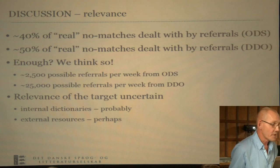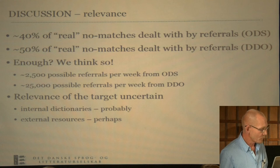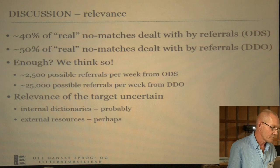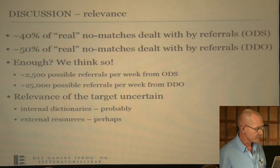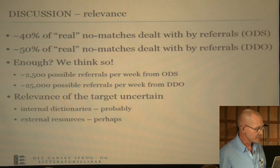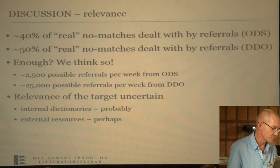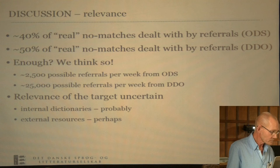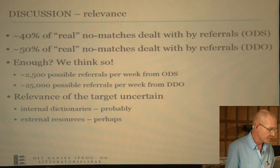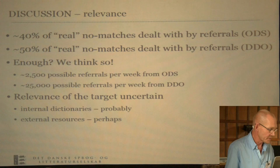Is it at all relevant to direct users to a result outside the dictionary they consulted? We have looked at samples for our two largest dictionaries and find that for ODS about 40% can be referred to an internal or external resource, and for DDO about 50%. In real figures, implementing this for one week would supply 2,500 ODS users and 25,000 DDO users with suggestions for a possible entry in one or more other resources. We cannot be sure whether the target entry is always relevant, but internal dictionaries are generally likely to provide an answer, and for proper nouns external resources may work particularly well.